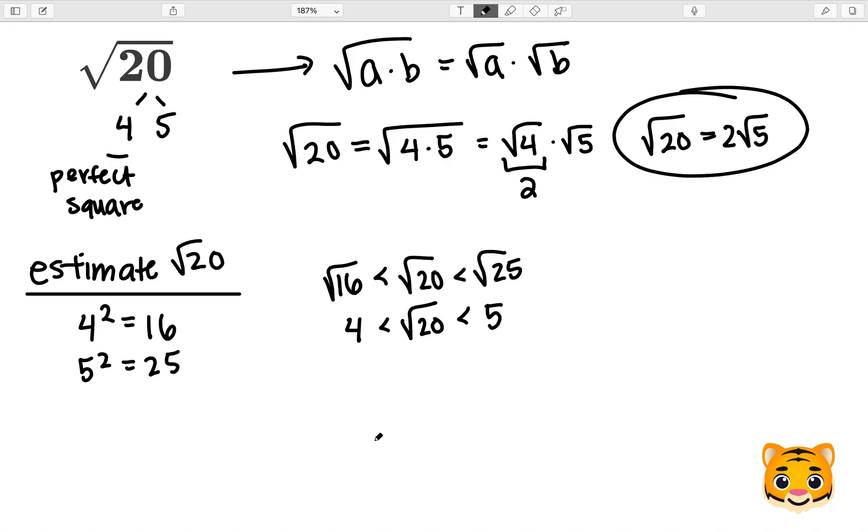We can then look at the difference between the perfect squares and 20 in order to find the value that the square root of 20 is closest to. So we would then do 20 minus 16 to give us 4, and then 25 minus 20 to give us 5.